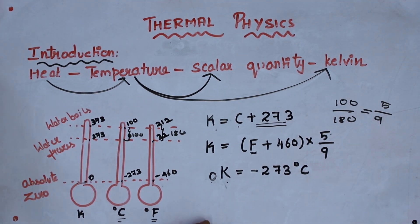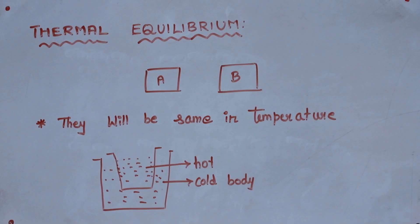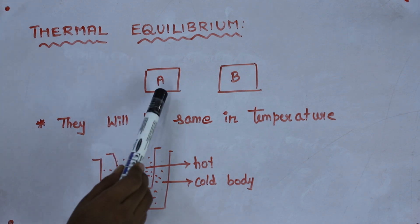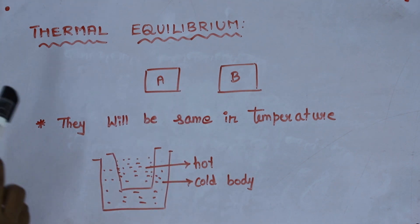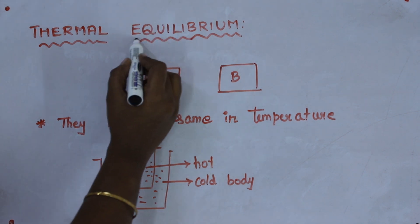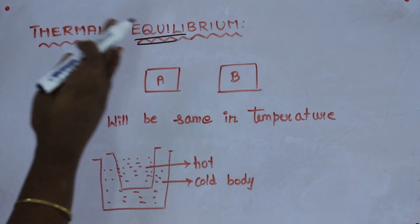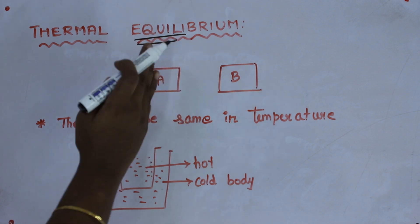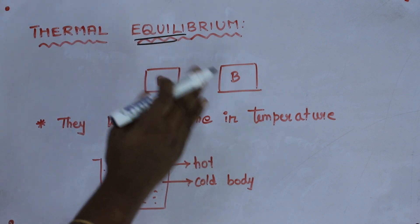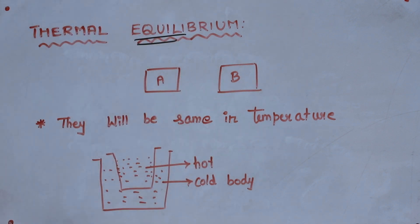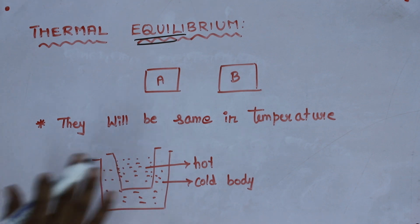Now we are going to see the next topic, thermal equilibrium. You consider two bodies. If they are same in their temperature, then it is said that the bodies are in thermal equilibrium. You can understand from the word equally. Equally in the sense, the temperature of both the bodies should be same. Then that is said to be thermal equilibrium.